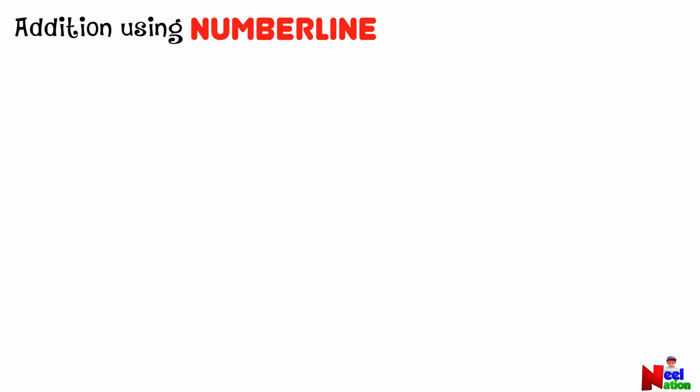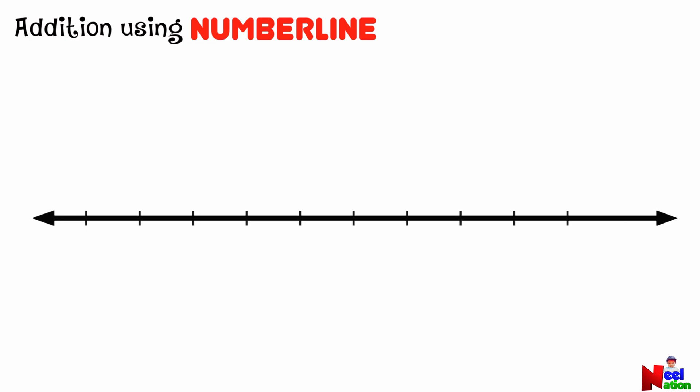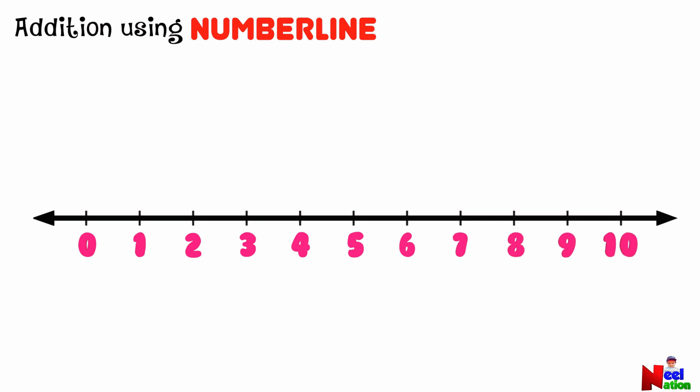Now, let's do addition using number lines. A number line is a straight line with numbers placed at equal intervals along its length. A number line is a math tool that helps us count and add or subtract numbers. Let's use this number line to find the sum of five plus two.